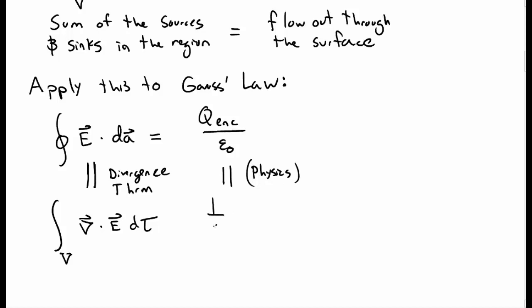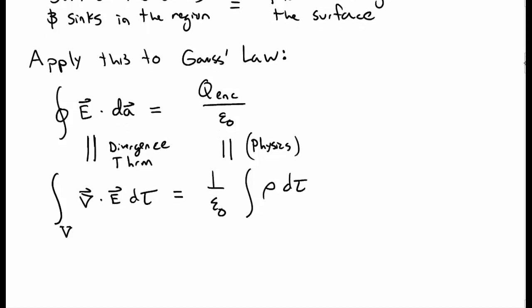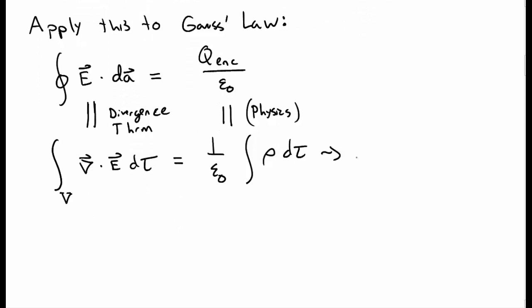just by what we mean by physics, by q enclosed, this is 1 over epsilon naught, the integral of rho, the volume charge, dτ. So these two sides must still be equal to each other. Maybe I'll rewrite this and pull the epsilon naught inside here. So I have the divergence of E over some volume, dτ,